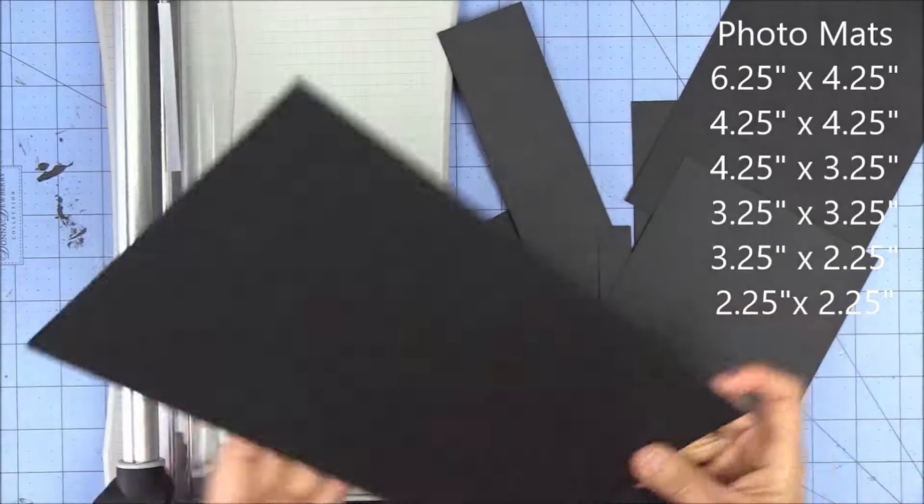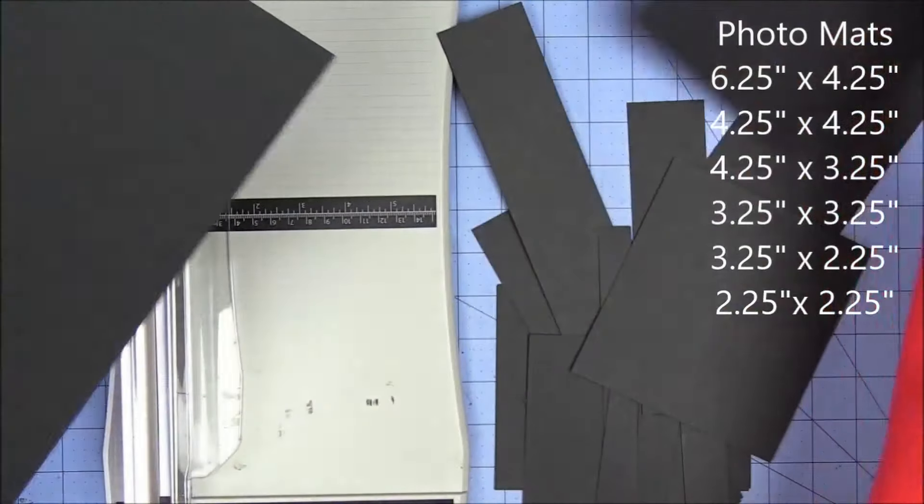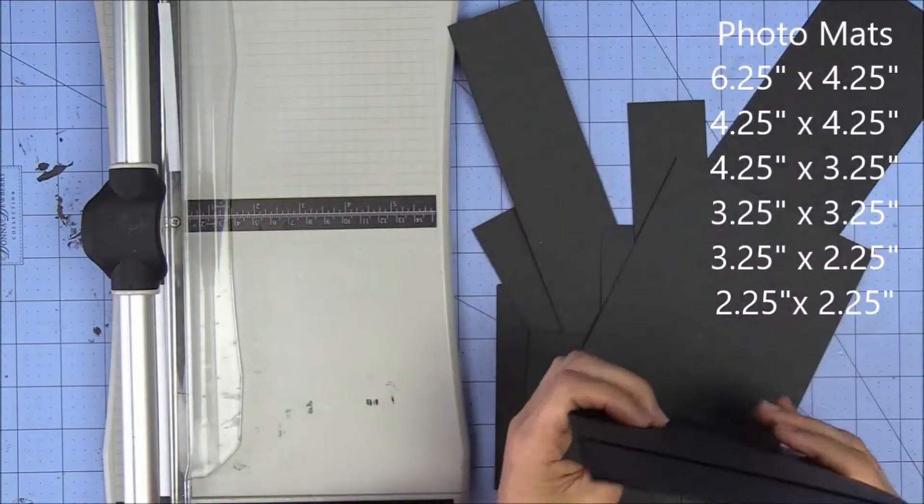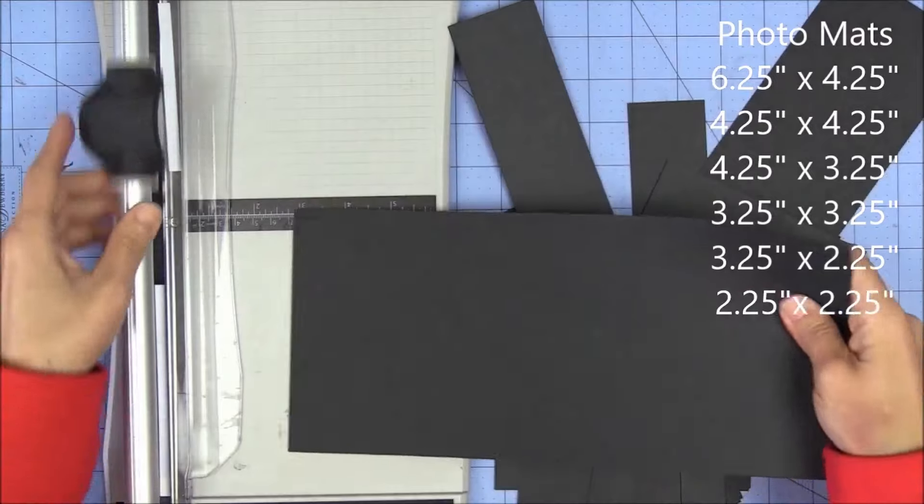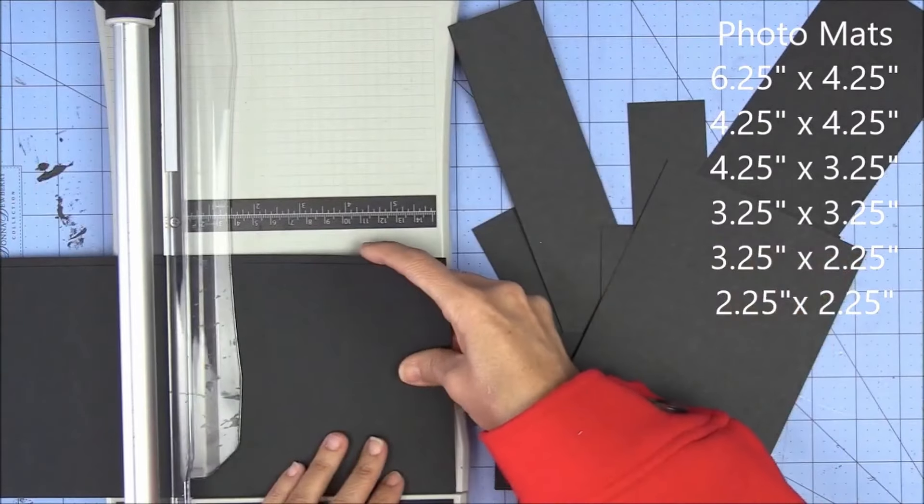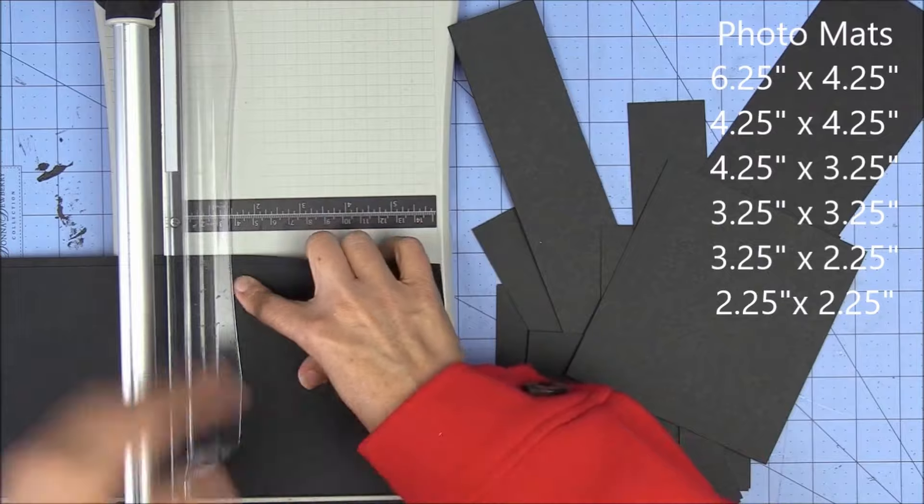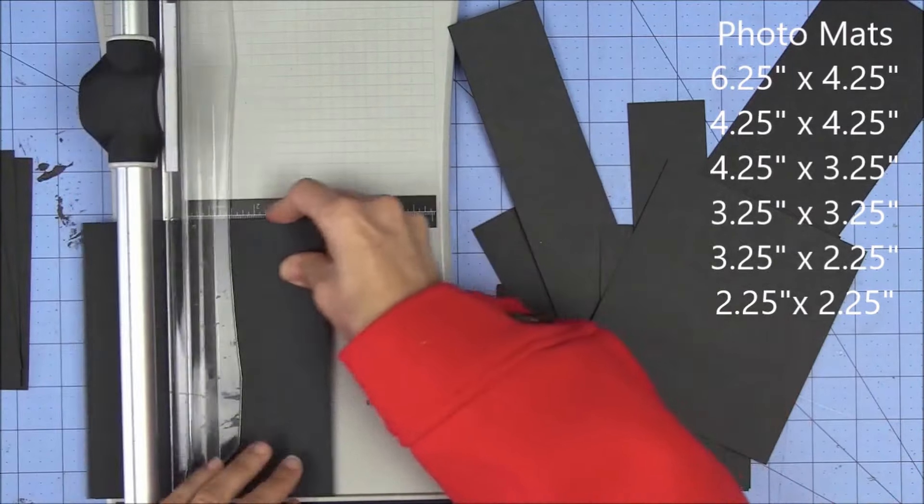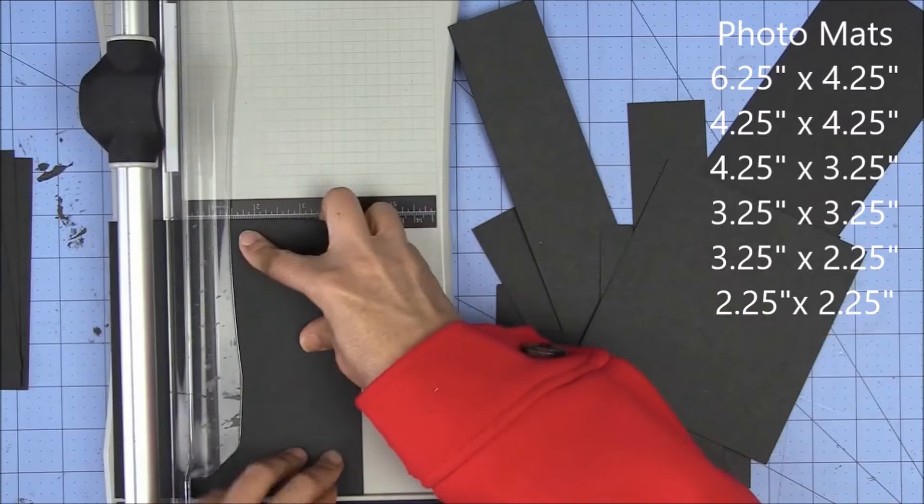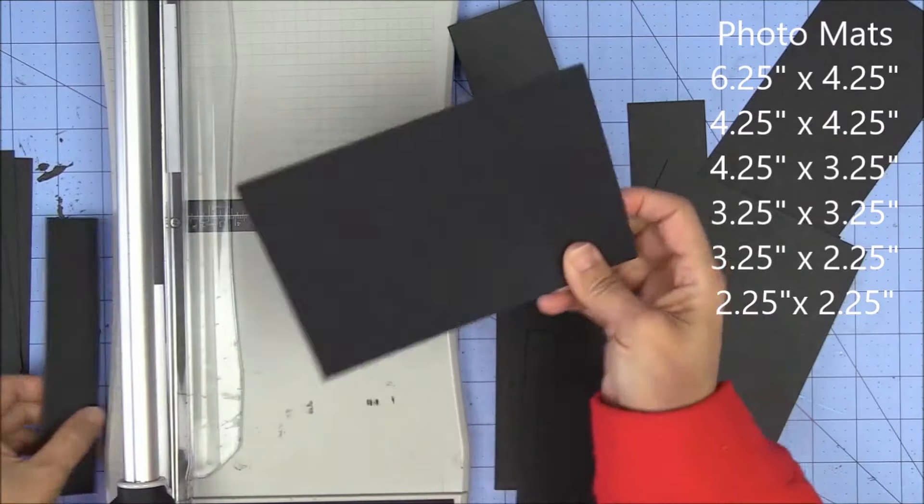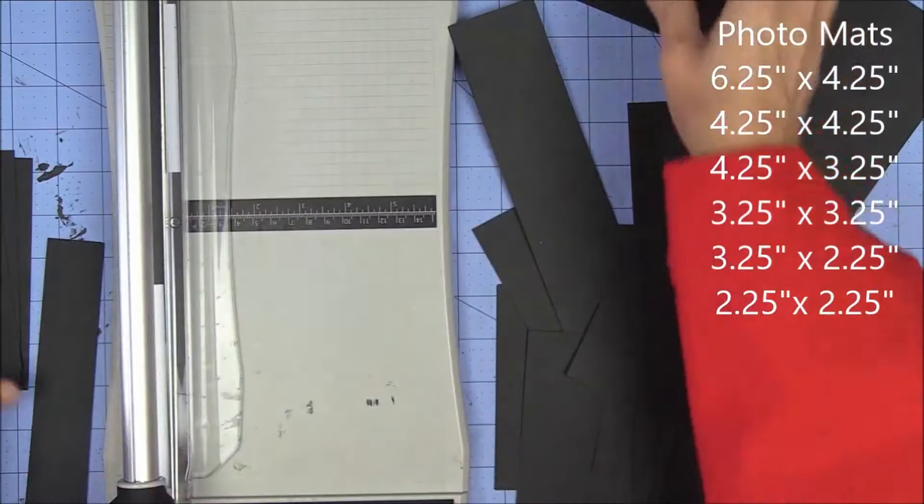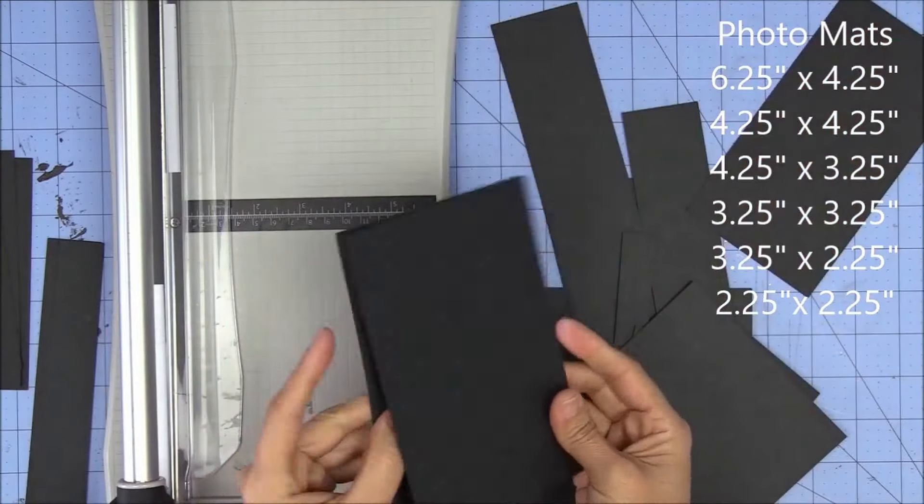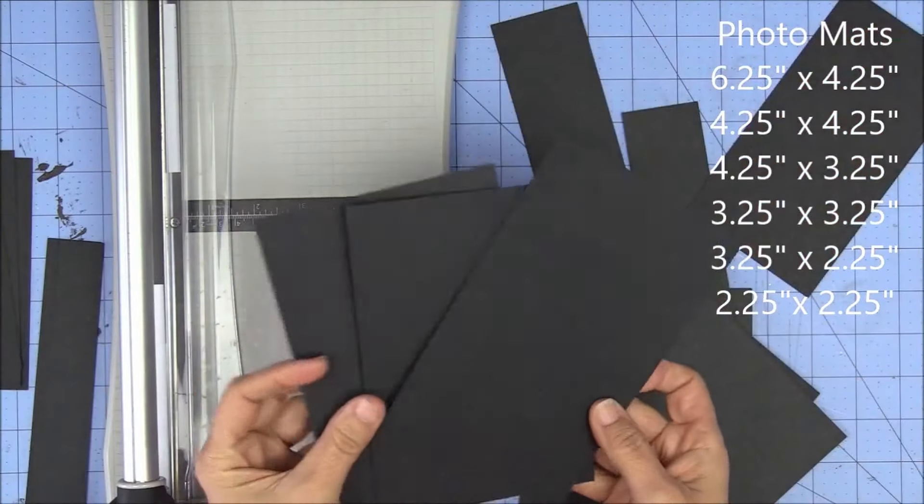So I start off with the big pieces and I start off with my very first measurement. I start off with the biggest photomats that I like to create, which are photomats for, you guessed it, a 4x6 photo. That measurement is 6 and a quarter by 4 and a quarter. So I try to see how many 6 and a quarters by 4 and a quarter I can get out of my stack of papers, my stack of scraps. Right now it's looking like 3.